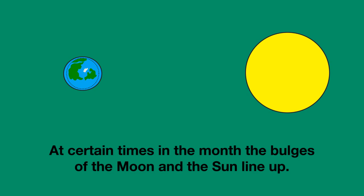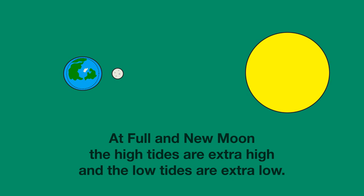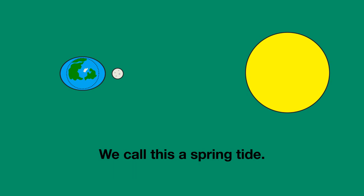At certain times in the month, the bulges created by the Moon and by the Sun line up with each other. This happens at full Moon, when the Sun and the Moon are on opposite sides of Earth and we can see the whole Moon, and at new Moon, when the Moon is directly in front of the Sun and we can barely see the Moon. This means that at full Moon and new Moon, the high tides are extra high and the low tides are extra low — we call this a spring tide.